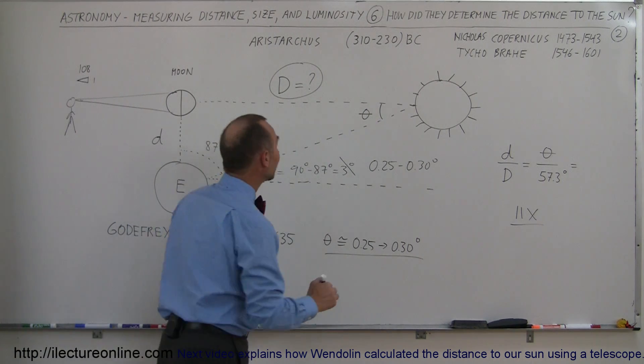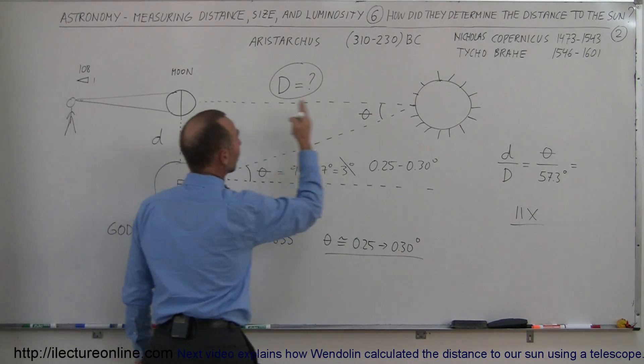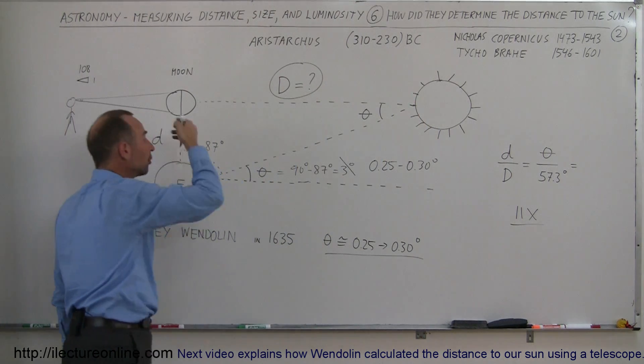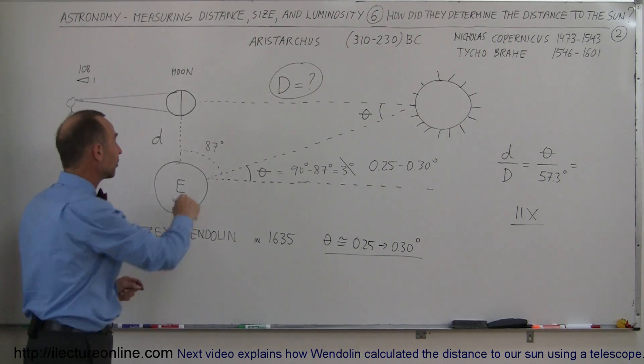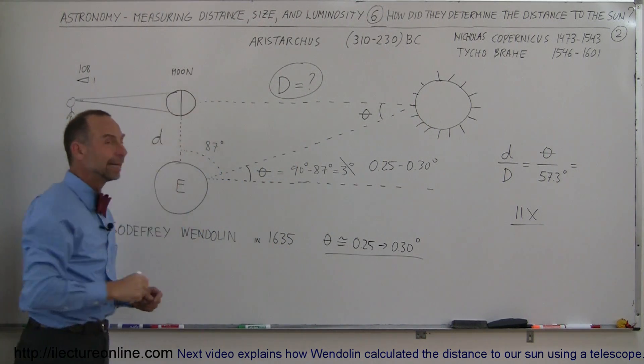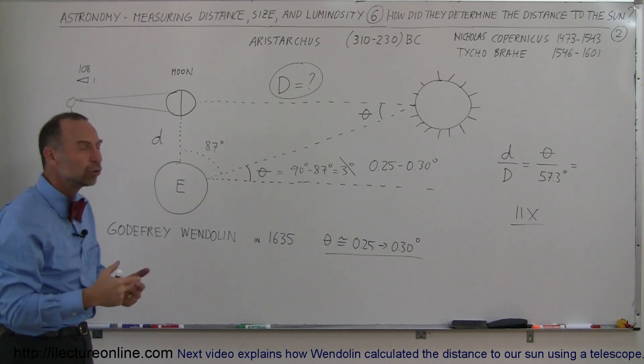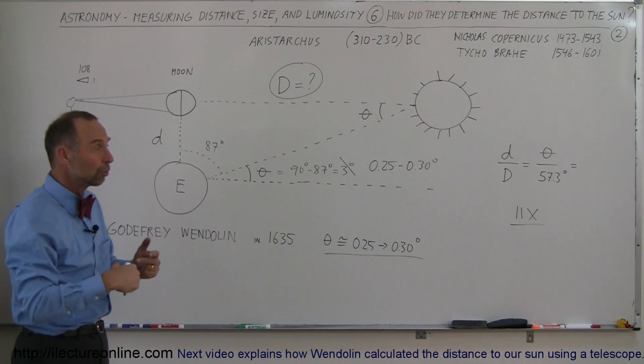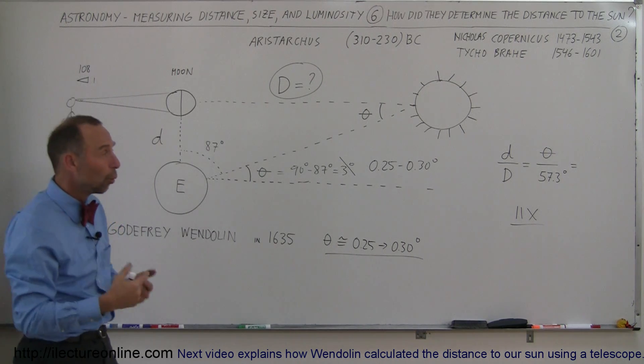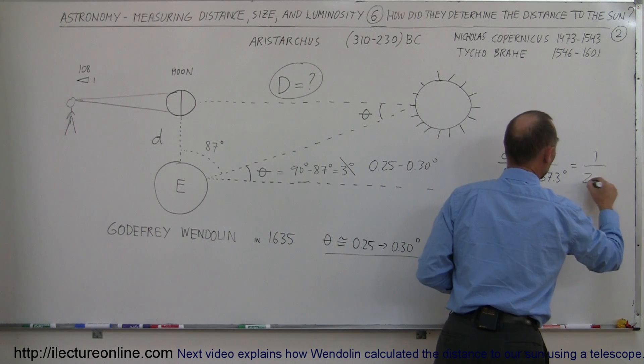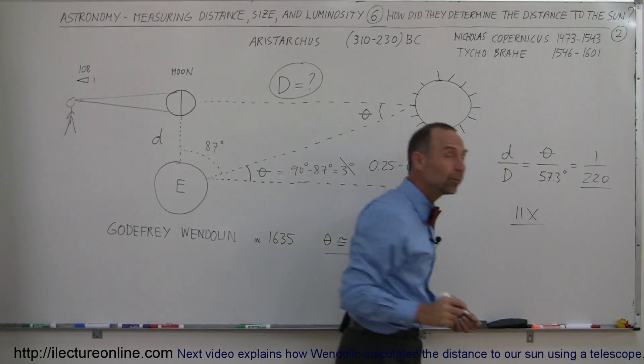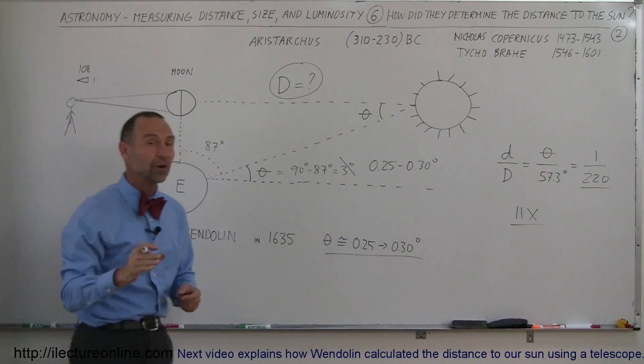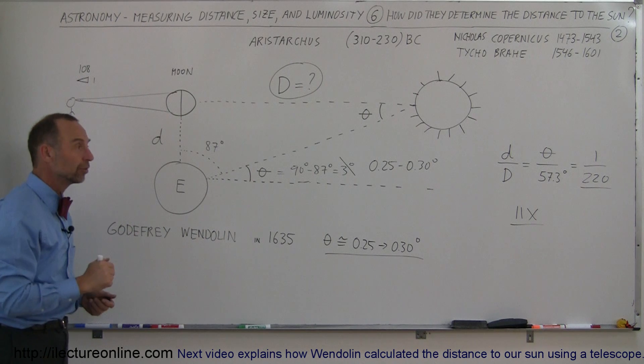So now instead of thinking that the distance between the sun and the moon-earth system was about 20 times the distance between the earth and the moon, he now said it was more like 200 to 220 times. He figured they were off by about a factor of 11, which would make that about a ratio of 1 in 220. So now he said that the sun was 220 times as far away from the earth as the moon was.